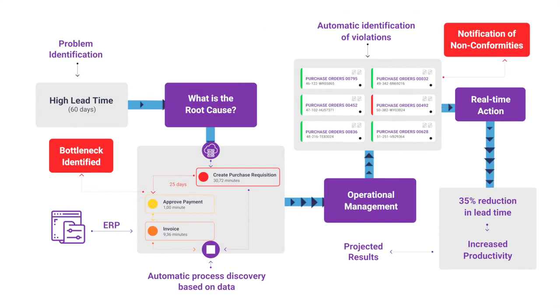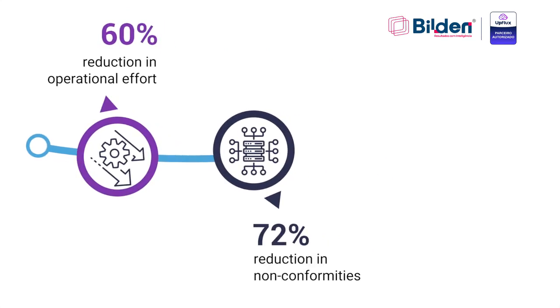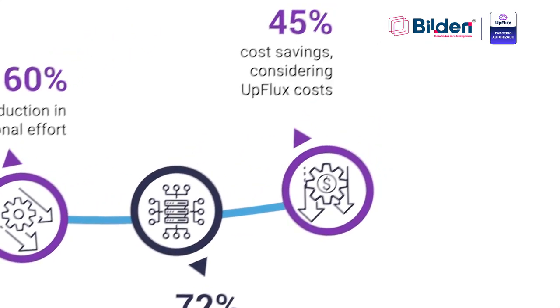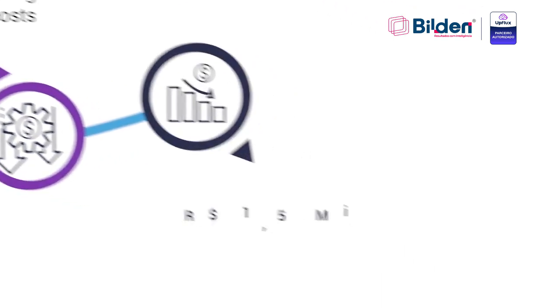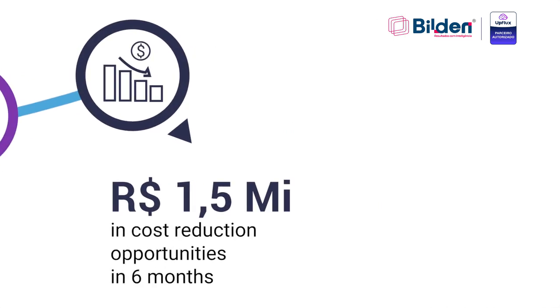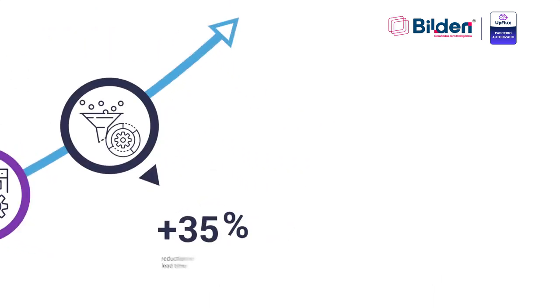We have clients who have achieved 35% improvements in their productivity with the implementation of UpFlux. Check out some of the results already achieved with Buildin and UpFlux: 60% reduction in operational effort, 72% reduction in non-conformities, 45% savings already considering costs with the UpFlux solution, 1.5 million Brazilian reals in cost reduction opportunities in 6 months, 2 million Brazilian reals cost avoided in the first year in auditing, plus 35% reduction in lead time.